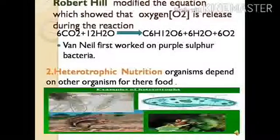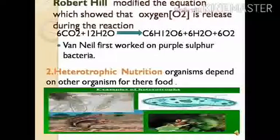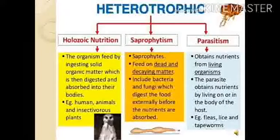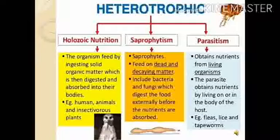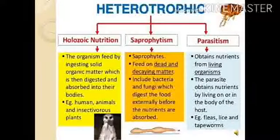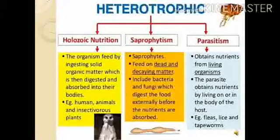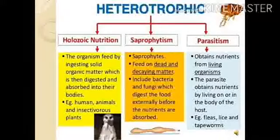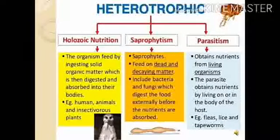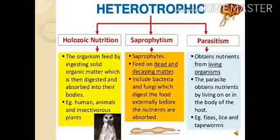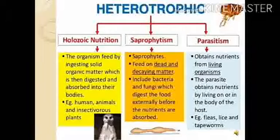The next type of nutrition is heterotrophic. Heterotrophic organisms depend on other organisms for food. 'Hetero' means different, 'trophic' means level. Heterotrophic nutrition is divided into holozoic nutrition, saprophytic nutrition, and parasitic nutrition. Holozoic organisms feed by ingesting solid organic matter which is digested inside the body. Saprophytic organisms feed on dead and decaying matter like bacteria and fungi. Parasites like mosquitoes depend on living organisms, extract nutrition, and harm the host organism.